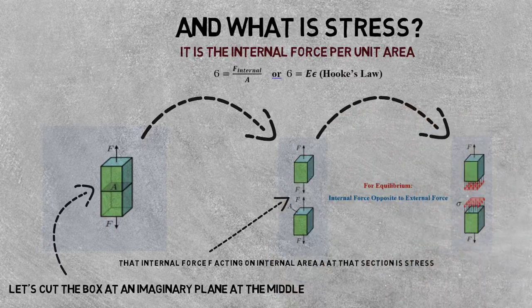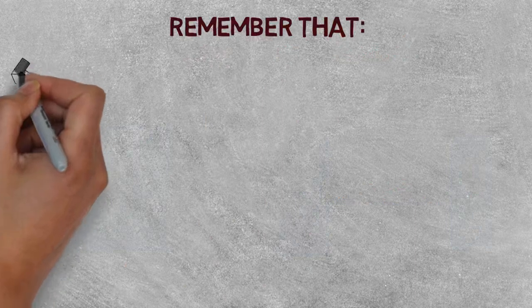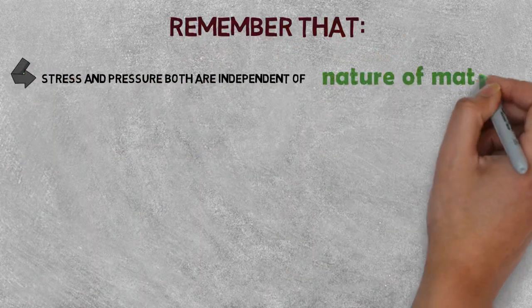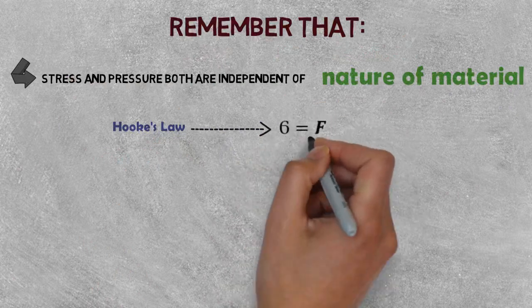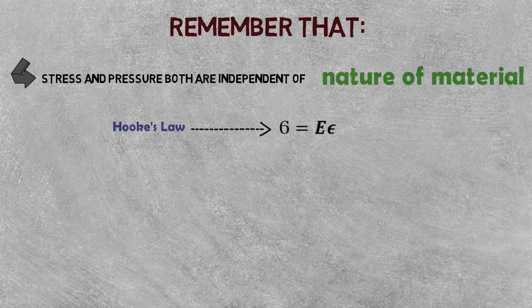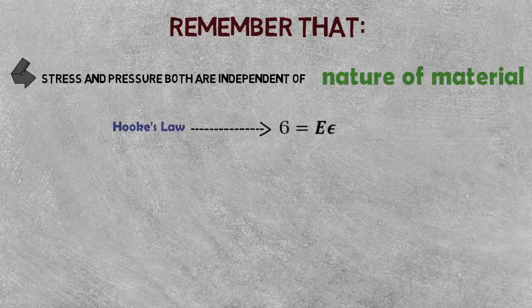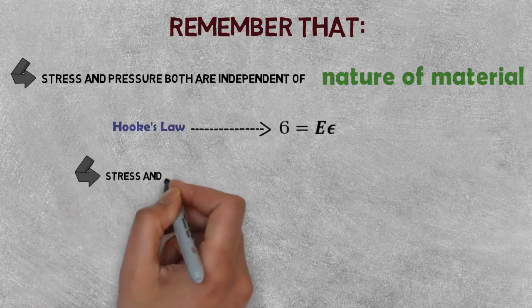Remember that no matter what the material is, stress is independent of the material. Hooke's law has a material property — elastic modulus — but that doesn't make stress material dependent. However, strain is material dependent. For example, consider two rods having the same cross-section and the same external force: they have the same stress, but the amount of deformation is different, which depends on the elastic modulus.